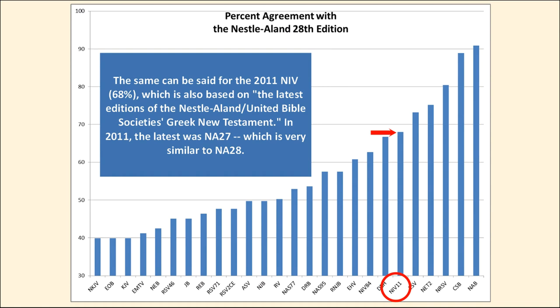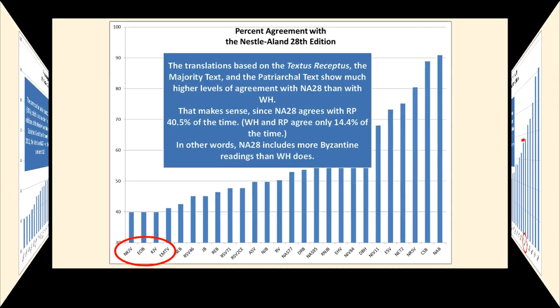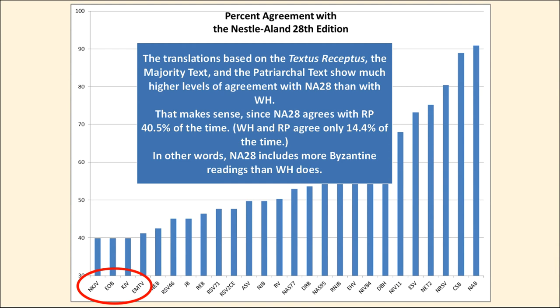The same can be said for the 2011 NIV, which has a 68% agreement rate with Nestle-Aland, despite claiming to be based on the latest editions. When the 2011 NIV was published, the latest Greek New Testament was NA27, which differs from NA28 in only about 33 instances, all in the Catholic epistles. Our four traditional text translations have higher levels of agreement with NA28 than with Westcott and Hort, which makes sense since NA28 itself agrees with Robinson-Pierpont 40.5% of the time — meaning NA28 includes more Byzantine readings than Westcott and Hort.